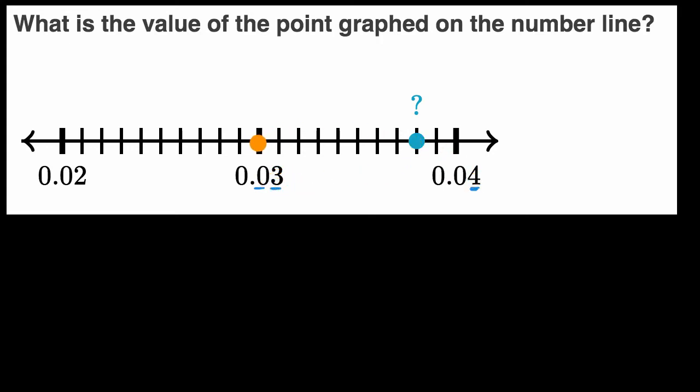And the space between three hundredths and four hundredths is divided into 10 equal spaces. So if this whole thing is a hundredth, this is equal to 0.01. Then each tenth of that is going to be a thousandth.